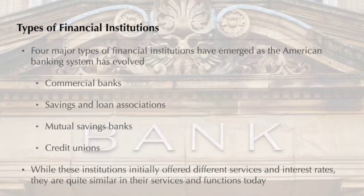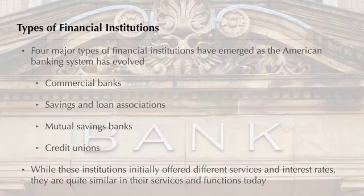As you have learned, the U.S. banking system has changed dramatically over time. Changes such as home banking and debit cards continue to take place all around you. Recently, the three main trends in banking have been automation, deregulation, and stabilization of the banking industry. Before looking at these trends, however, you must be able to identify the players in the field — the financial institutions.